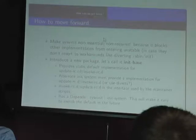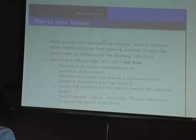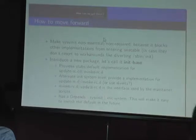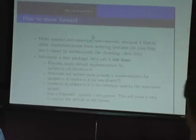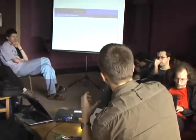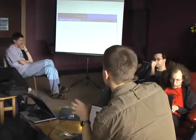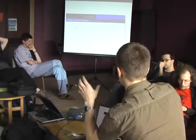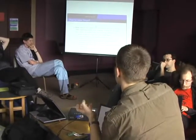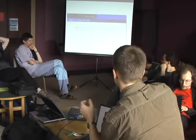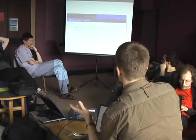My idea was to have a package called 'initbase' where you ship very basic stub implementations of invoke-rcd and update-rcd — which only return zero. Then the actual init implementation installs working versions of update-rcd and invoke-rcd. Does that sound like a plan?